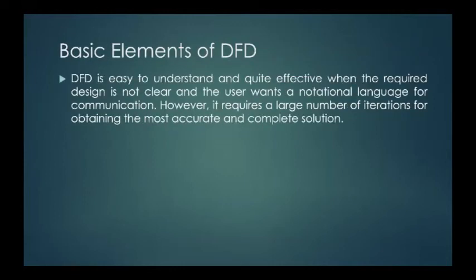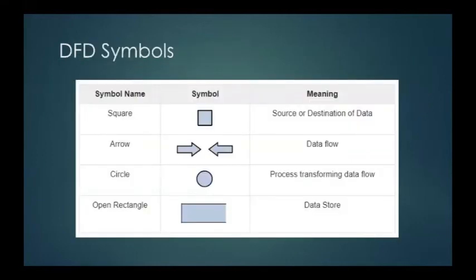Basic elements of data flow diagram or DFD. DFD is easy to understand and quite effective when the required design is not clear and the user wants a notational language for communication. However, it requires a large number of iterations for obtaining the most accurate and complete solution. These are the basic symbols of data flow diagram: square for the source or destination of data, arrow which means data flow, circle for process transforming data flow, and open rectangle which is the data store or the database.